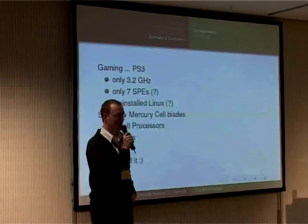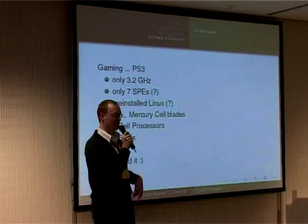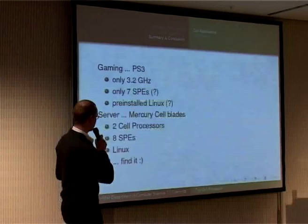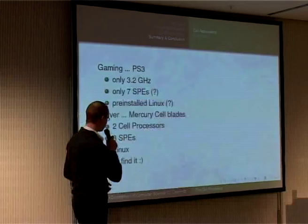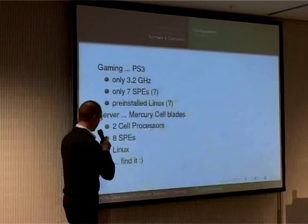The second application is server applications. Mercury thinks the Cell processor is very mighty and very good for servers. They sell a blade server compatible with the usual IBM blade server, with two Cell processors and fortunately 8 SPEs enabled — which is another evidence for the rootkit theory. It's running Linux, of course. Interestingly, we could beat the world's fastest supercomputer with 131,000 processors using just 14,000 Cell processors with double precision, and only 1,400 with single precision. The Cell offers 256 gigaflops versus about 6.4 gigaflops on today's current processors.